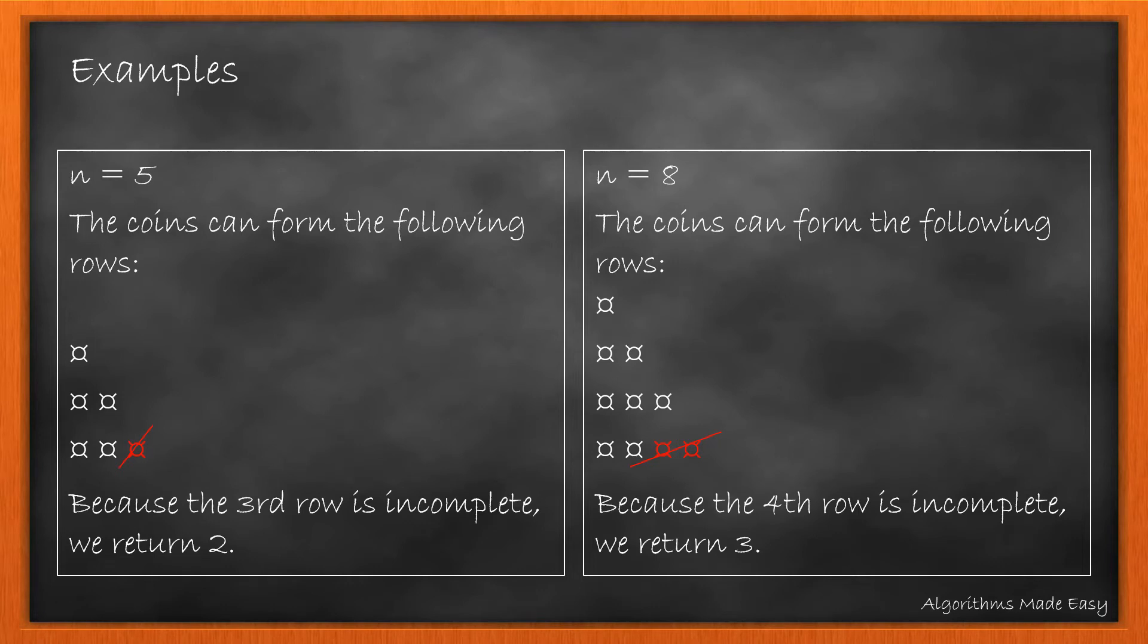For both the examples shown, we can see that the last rows are not completely filled. So, the program returns 2 for the example with n equal to 5 and 3 for the second example with n equal to 8.